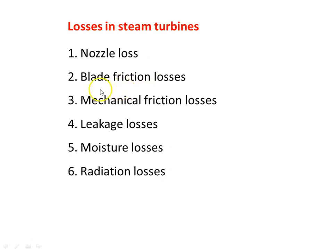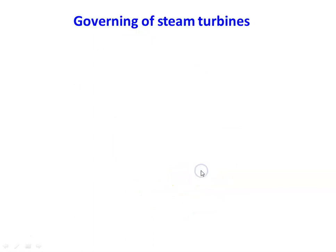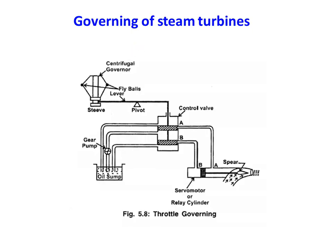To summarize, the different types of losses in a steam turbine are: nozzle losses, blade friction losses, mechanical friction losses, leakage losses, moisture losses, and radiation losses. Now, governing of the steam turbine. Governing means maintaining the speed of the steam turbine at a constant value irrespective of the load on the turbine. There are three different types of governing. The first is throttle governing, which is used in the impulse turbine.